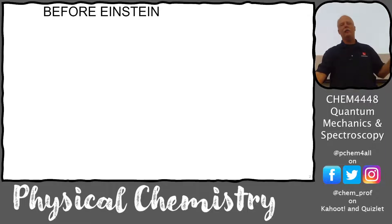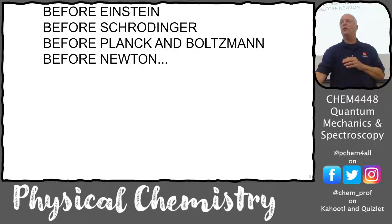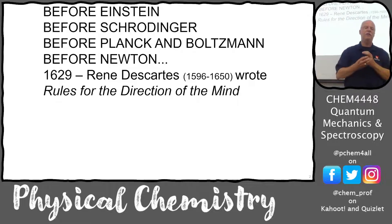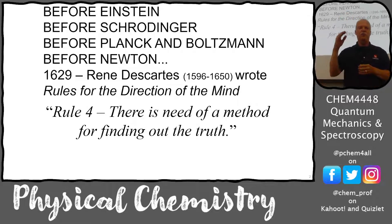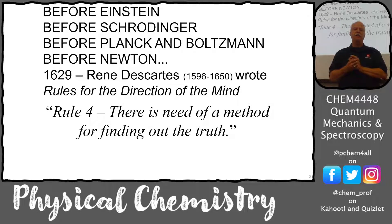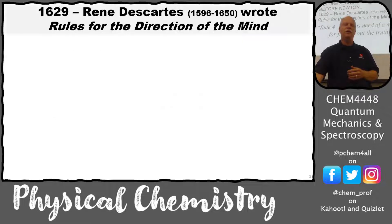Let's go way back — before Einstein, before Schrödinger, before Planck and Boltzmann, even before Newton — we had René Descartes. In 1629, he was trying to figure out: is there a reliable philosophy or way of getting at the truth? That's what he wrote in Rules for the Direction of the Mind. Rule number four was that there needs to be a method for finding out the truth.